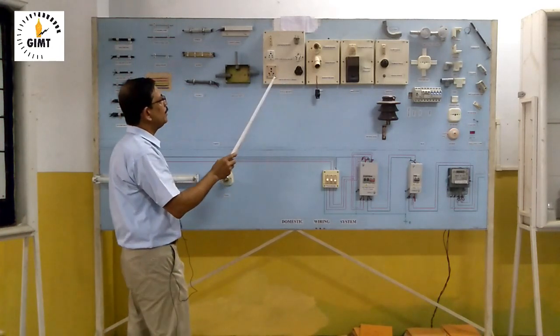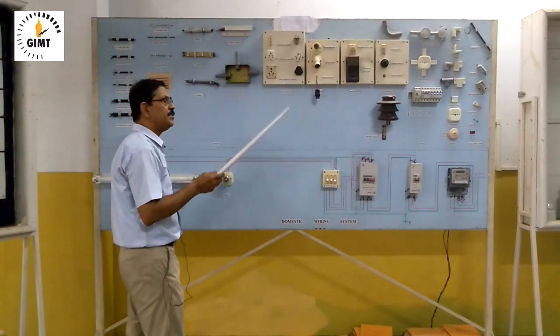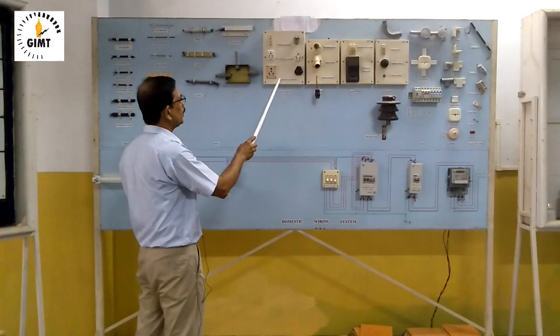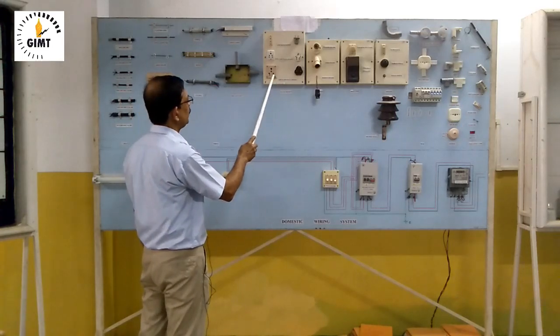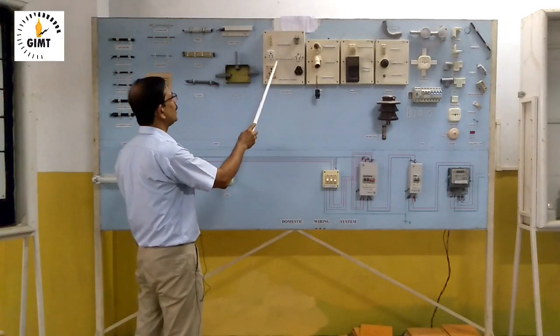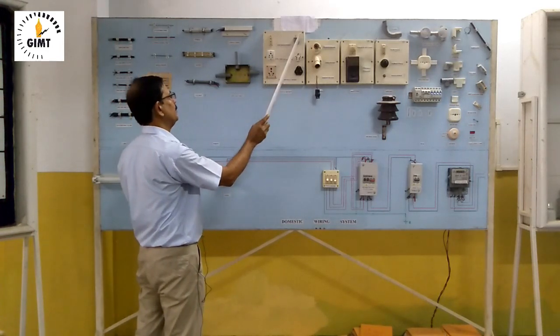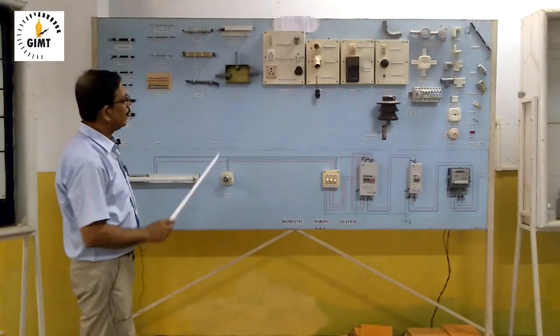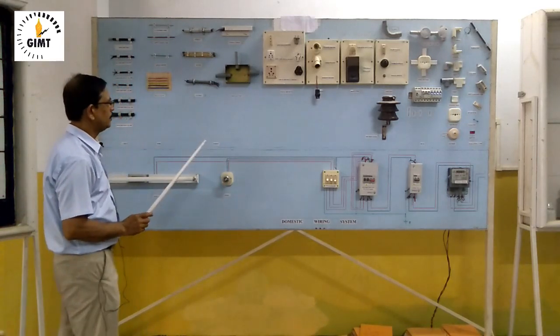So when you are using like heater, geyser, you cannot use this. You have to use more current rating plug and socket. So in that case you have to use three-pin 15A. And in general we are using three-pin 5A. So as per your requirement you have to select the ampere range of the socket, plug and socket.